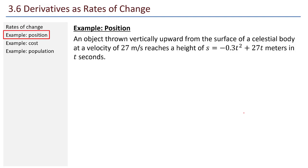First example, position. An object thrown vertically upward from the surface of a celestial body at a velocity of 27 meters per second reaches a height of s = -0.3t² + 27t meters in t seconds. There are lots of questions that we can ask about this situation.